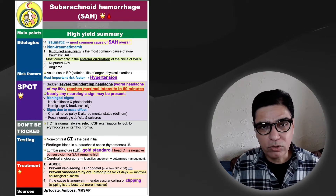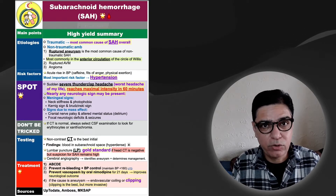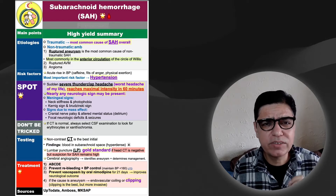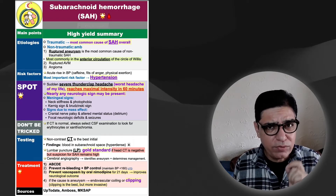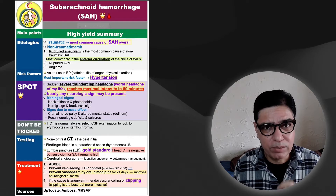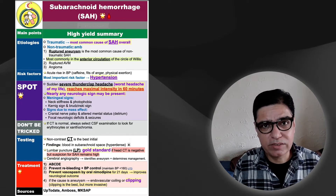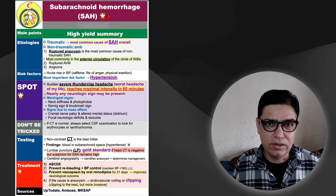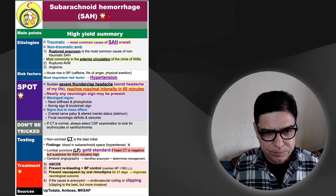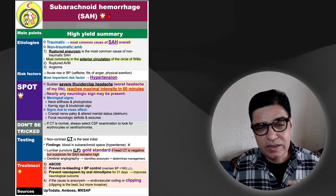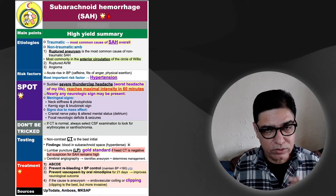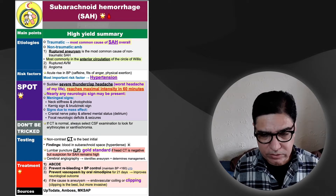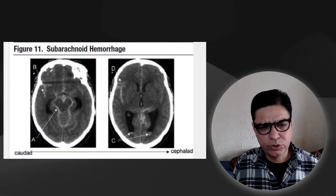If you are clinically suspecting subarachnoid hemorrhage, start with a CT scan. In most cases, CT will pick it up as a hyperdense lesion. But if the CT is negative and suspicion remains high, you should still proceed with a lumbar puncture. If the CSF shows blood or xanthochromia, that confirms the diagnosis. Remember: CT scan can sometimes be negative — if your suspicion is high, go for the lumbar puncture.